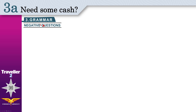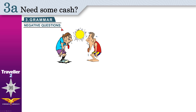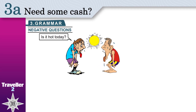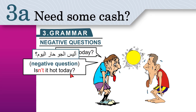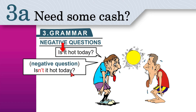Today's grammar topic is negative questions. 'Is it hot today?' is not a negative question. A negative question is when you say 'Isn't it hot today?' We added 'not' to the auxiliary verb 'is' — 'is' becomes 'isn't'. When do we use one versus the other?